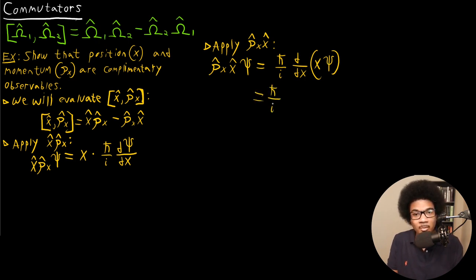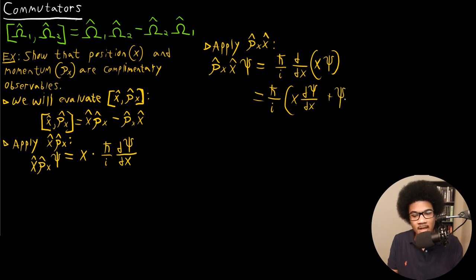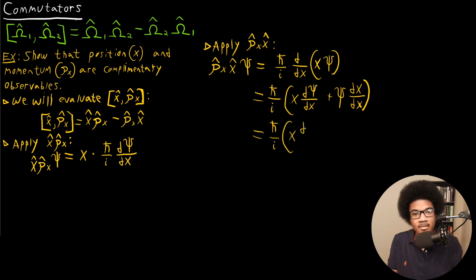Using the product rule, we're going to have x · d-psi/dx plus psi · dx/dx. When we take the derivative of x, that's just going to give us one, so we'll be left with H-bar over i times (x · d-psi/dx + psi).